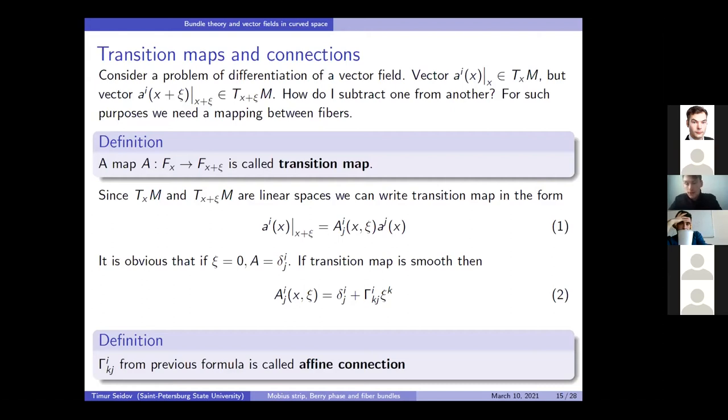This mapping is called transition mapping. In the literature, you may find it called the connection, but to avoid the confusion with the connection that we will define below, we will call it the transition map.